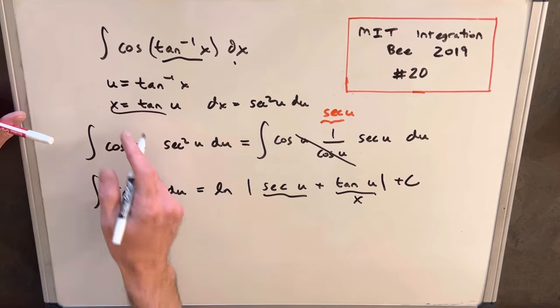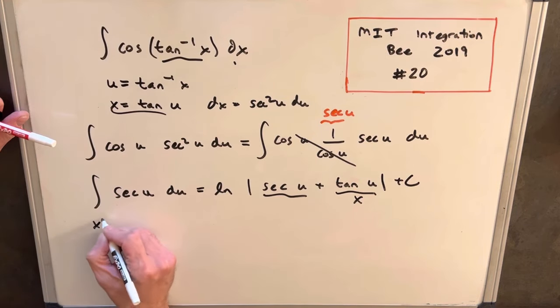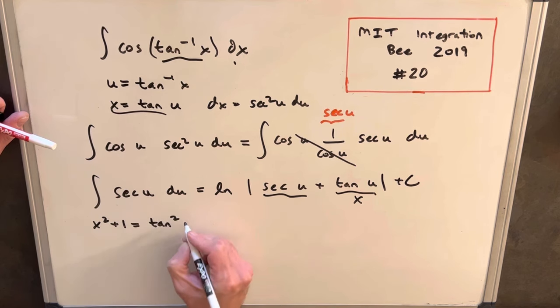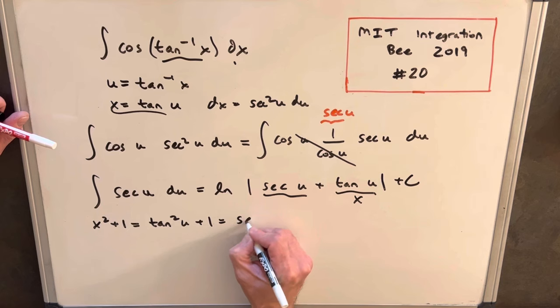I usually like to draw a triangle for this, but what we can actually do is take our x value and notice that x squared plus 1 is tan squared u plus 1, which is just secant squared u.